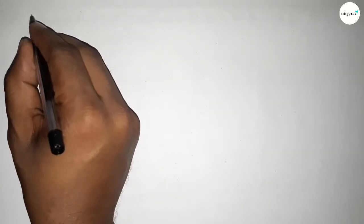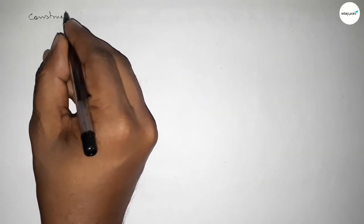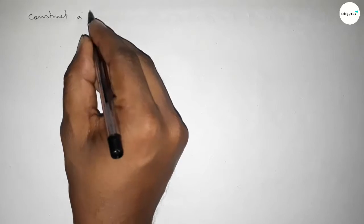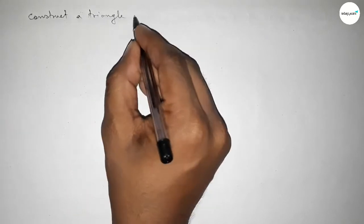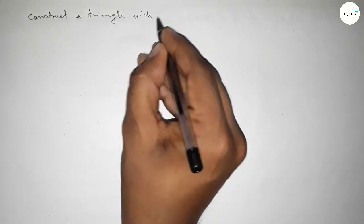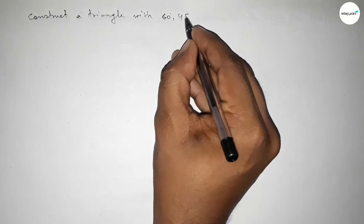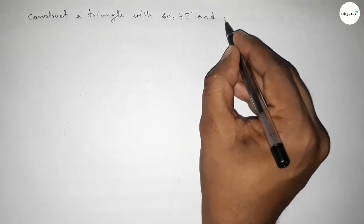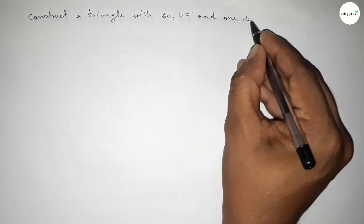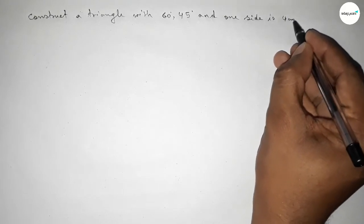Hi everyone, welcome to SI Share Classes. Today in this video we have to construct a triangle with two given angles — 60 degrees and 45 degrees — and one given side of 4 centimeters. So let's start the video.